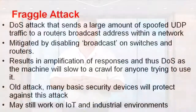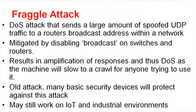A fraggle attack — remember: fraggle UDP — is a denial-of-service attack that sends a large amount of spoofed UDP traffic. This is a test question: a DoS attack that sends a large number of spoofed UDP packets to a router's broadcast address within a network.